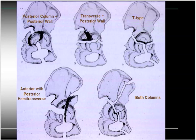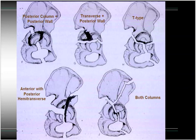In the both-columns fracture, the hallmark is that no portion of the acetabular articular surfaces are in continuity with the axial skeleton. You have a stable iliac wing segment connected to the skeleton via the sacroiliac joint, but the rest of the acetabulum is dissociated from the axial skeleton. Both-columns fractures can actually be quite easily treated in many cases — some even nonoperatively — because although you have significant displacement, the anterior and posterior columns remain relatively well reduced relative to one another.